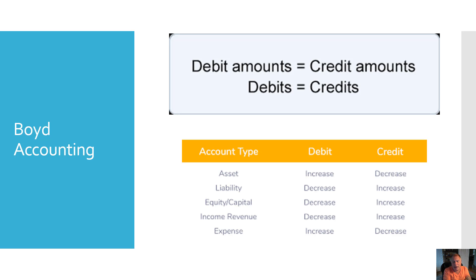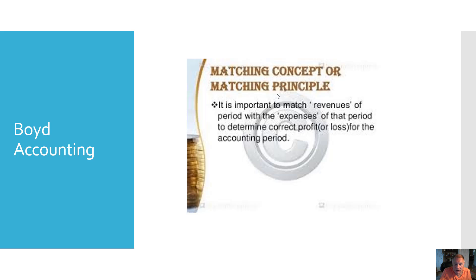It's helpful to look at the account type: is it an asset, a liability, equity or capital, income or revenue, or an expense? A debit will increase assets, decrease liabilities, decrease equity/capital, decrease income, and increase expense. We always want to look at both sides of the transaction — this is fundamental, and you can make many mistakes without looking at the other side.